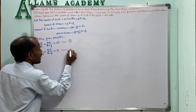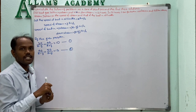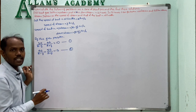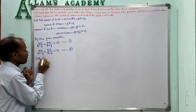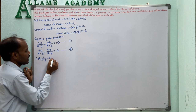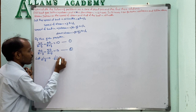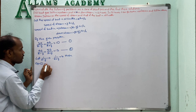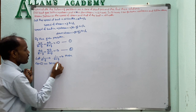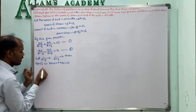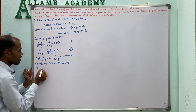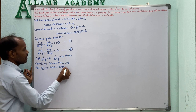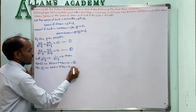Let 1/(X−Y) equal A and 1/(X+Y) equal B. Then equation 1 becomes 30A plus 44B equals 10, and equation 2 becomes 40A plus 55B equals 13. These are equations 3 and 4.